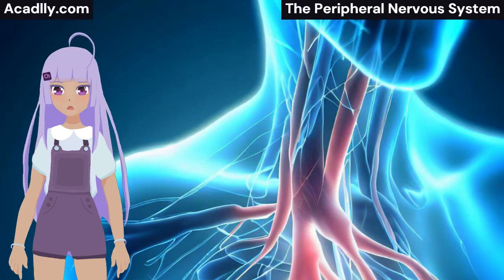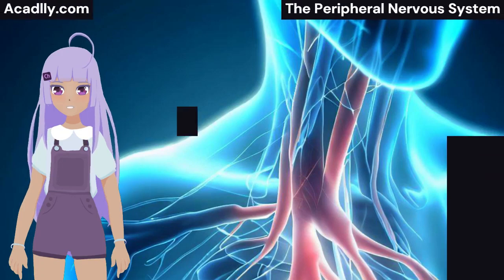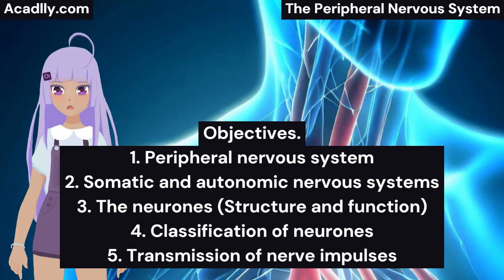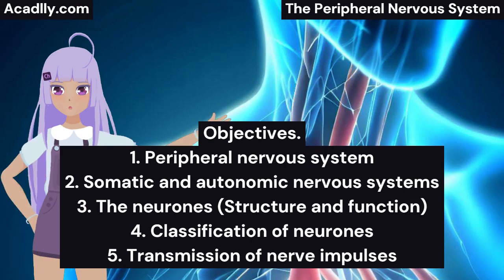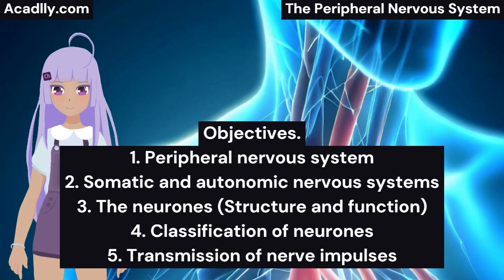The Peripheral Nervous System. At the end of this lesson, you should be able to know the following: 1. Peripheral Nervous System. 2. Somatic and Autonomic Nervous Systems.